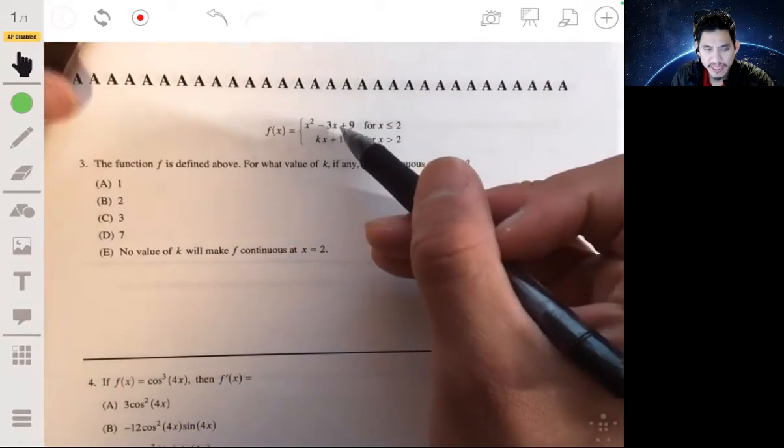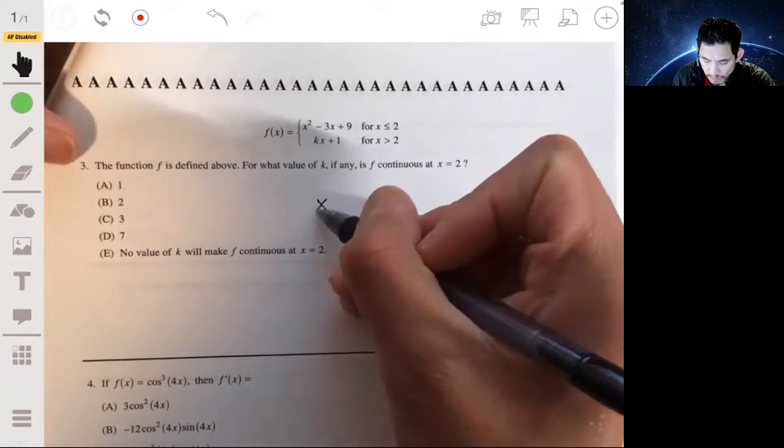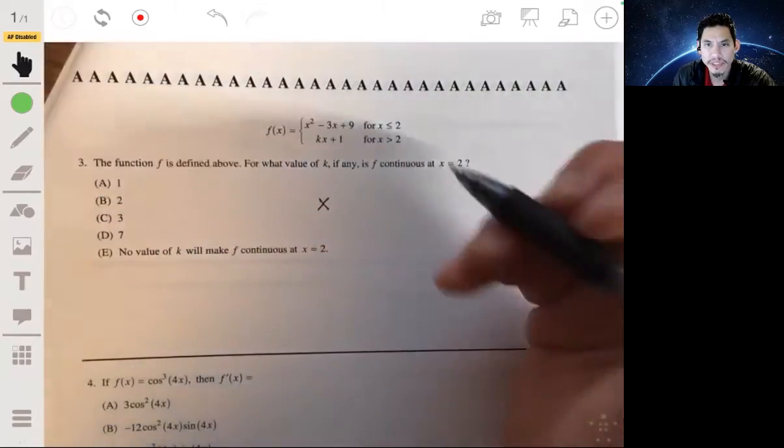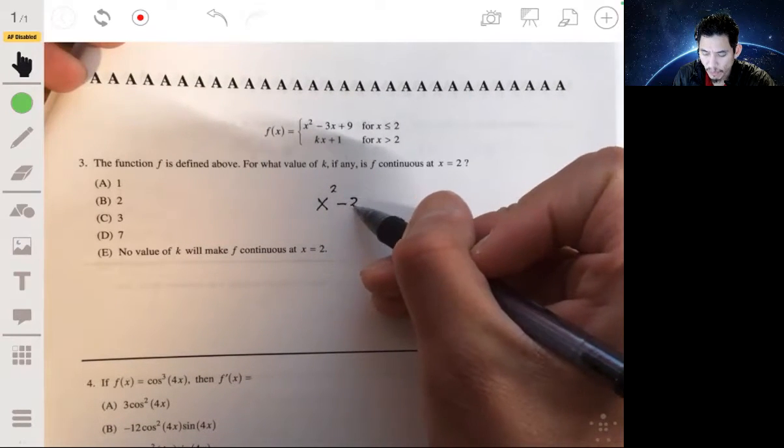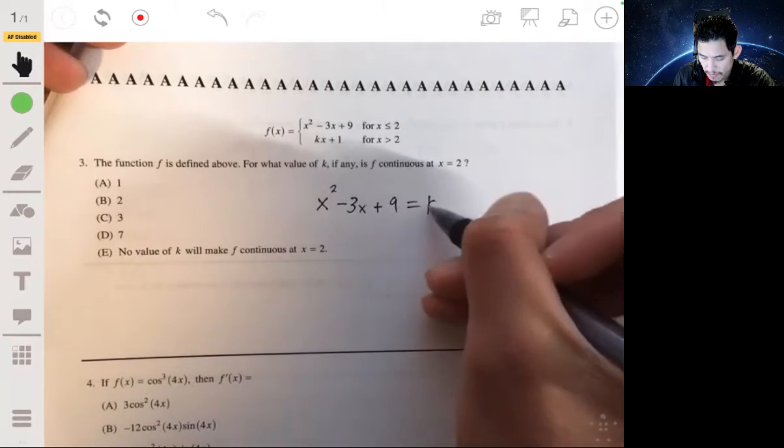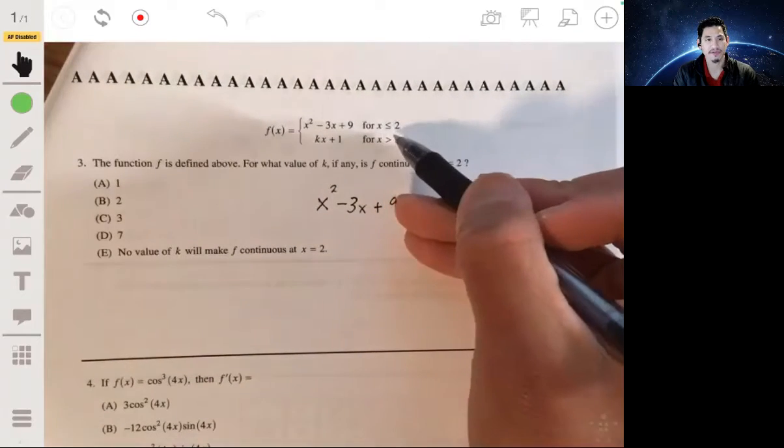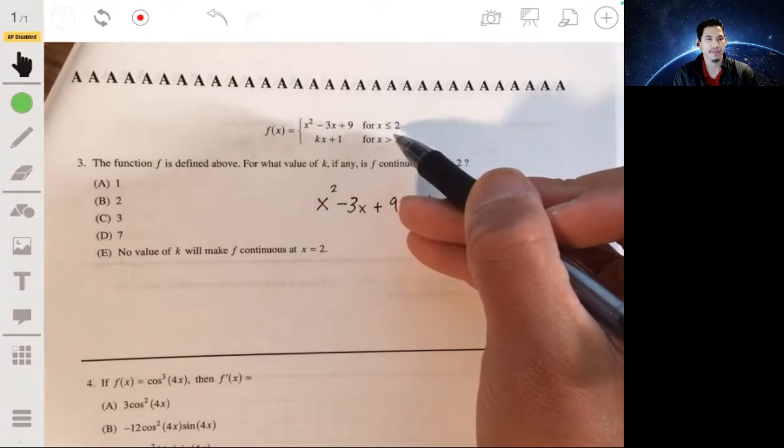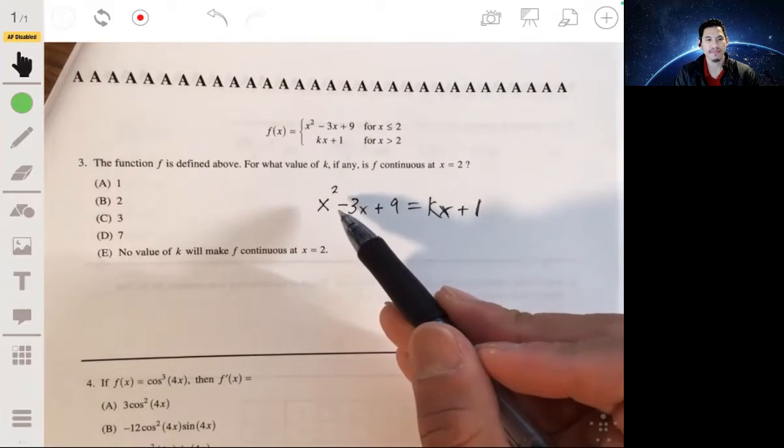For it to be continuous, that essentially means that these two functions will have to basically equal each other. They're going to both go to the same point when x is 2. So let's set them equal to each other first. Since we're looking at x equals 2, we just plug 2 into this equation for x and then solve for k.